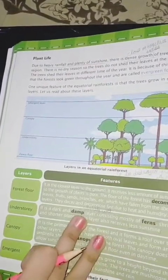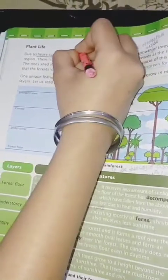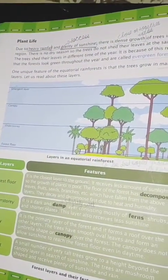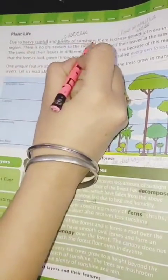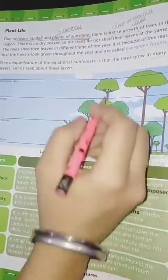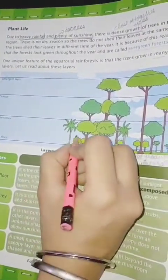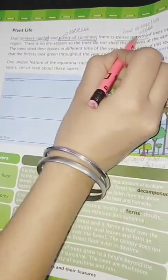Now we are going to discuss the plant life in this region. There is plenty of rainfall, heavy rainfall, and plenty of sunshine. Excess sunshine occurs because it lies near the equator, where direct rays from the sun hit the surface. The growth of plants and trees is quite dense — each and every tree grows very close to each other, which represents dense growth.